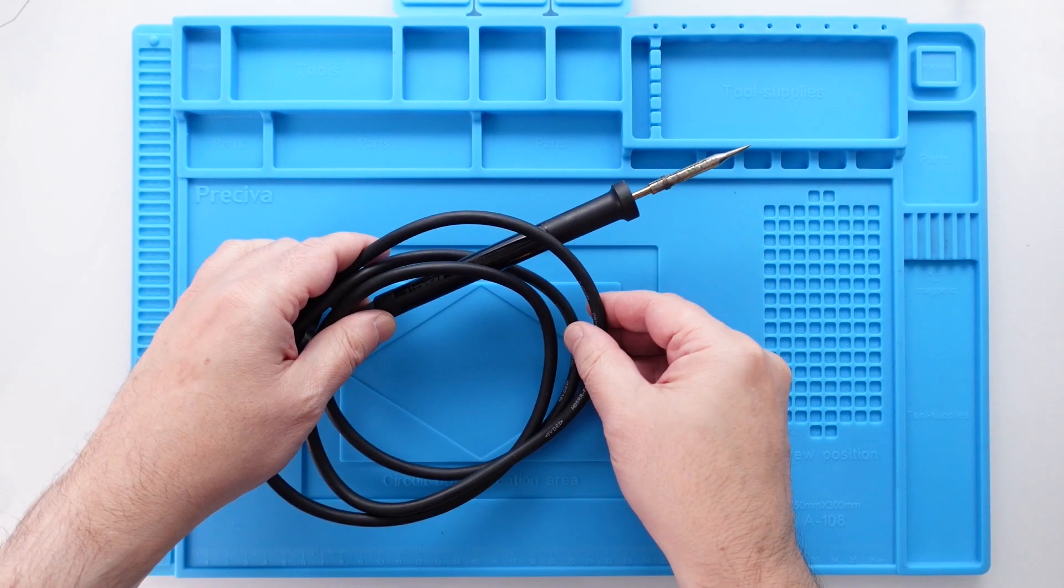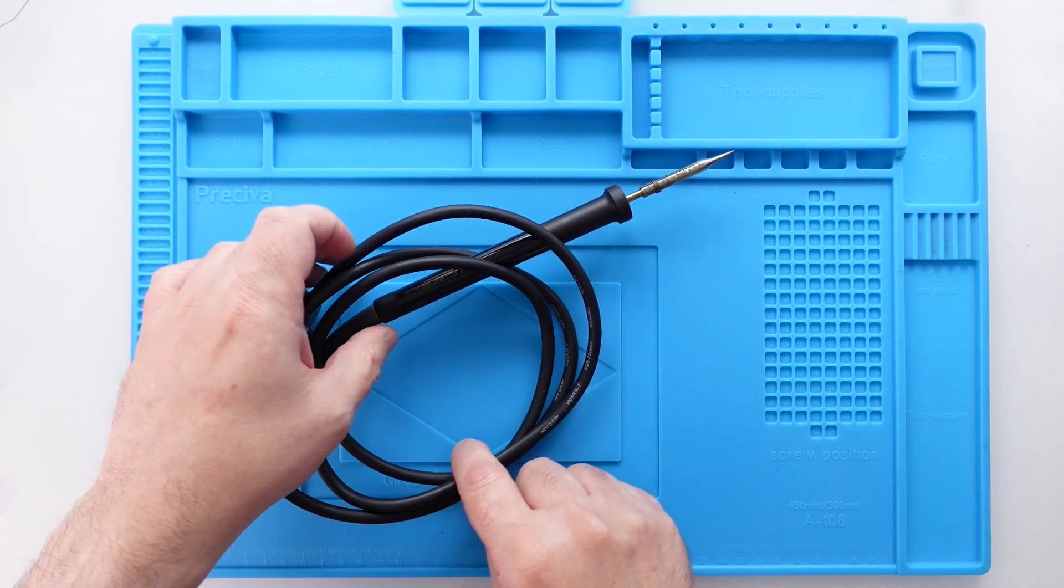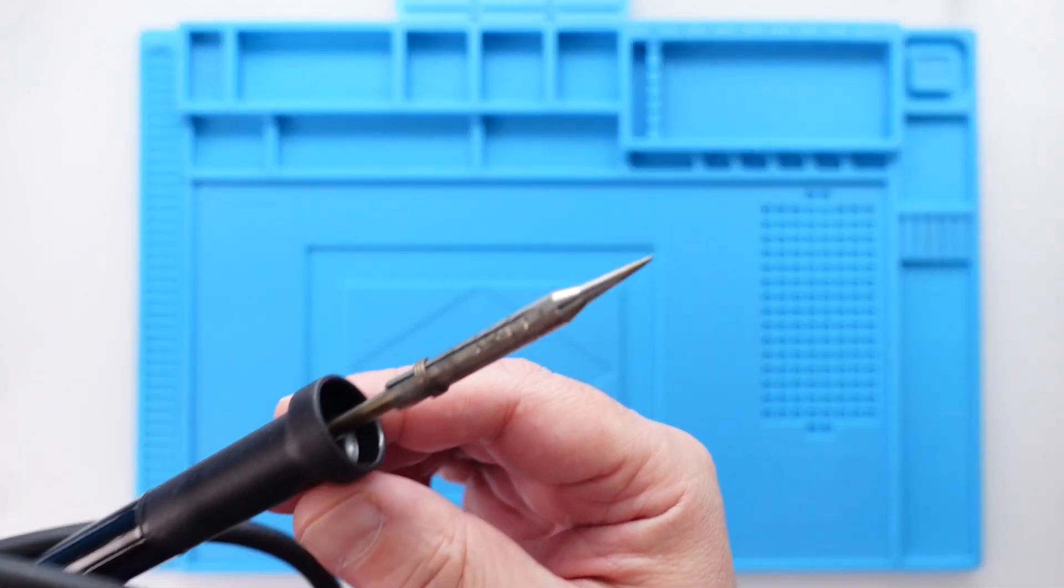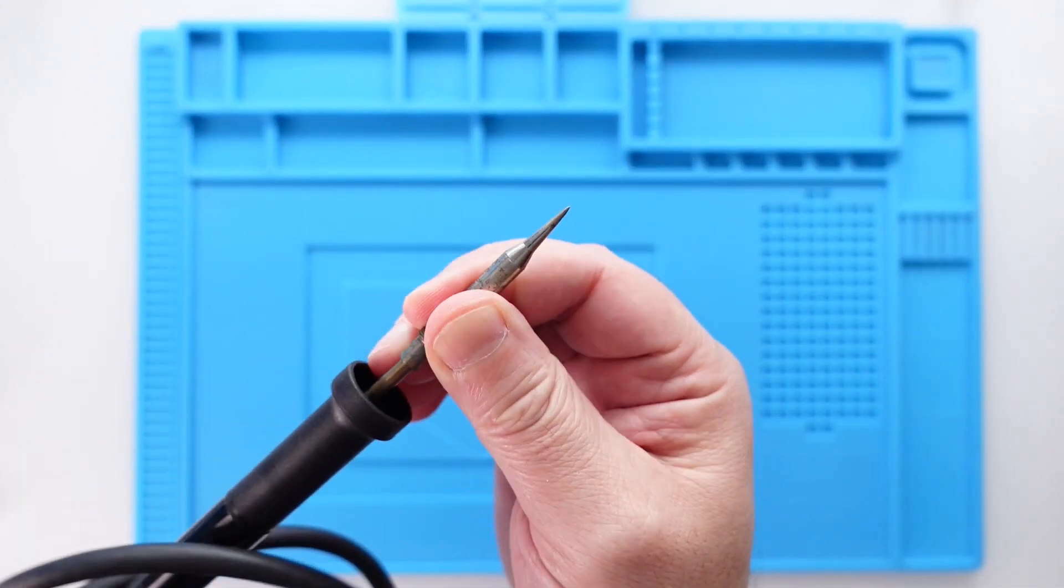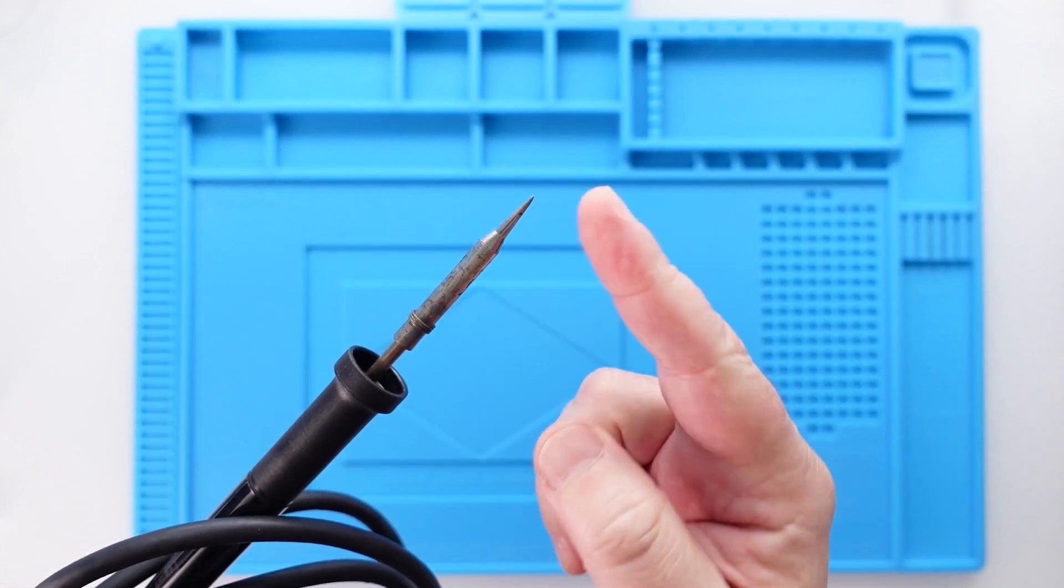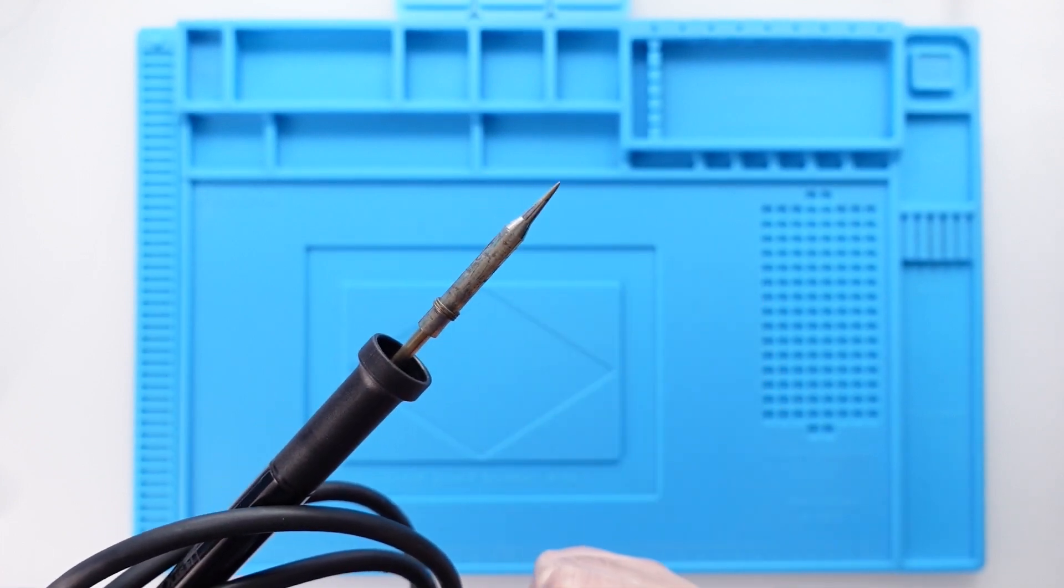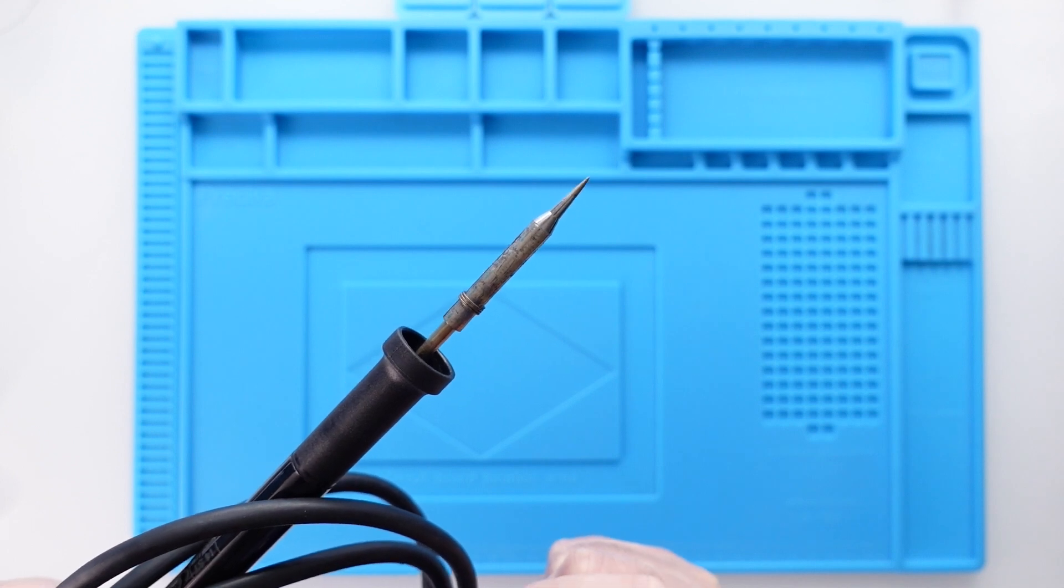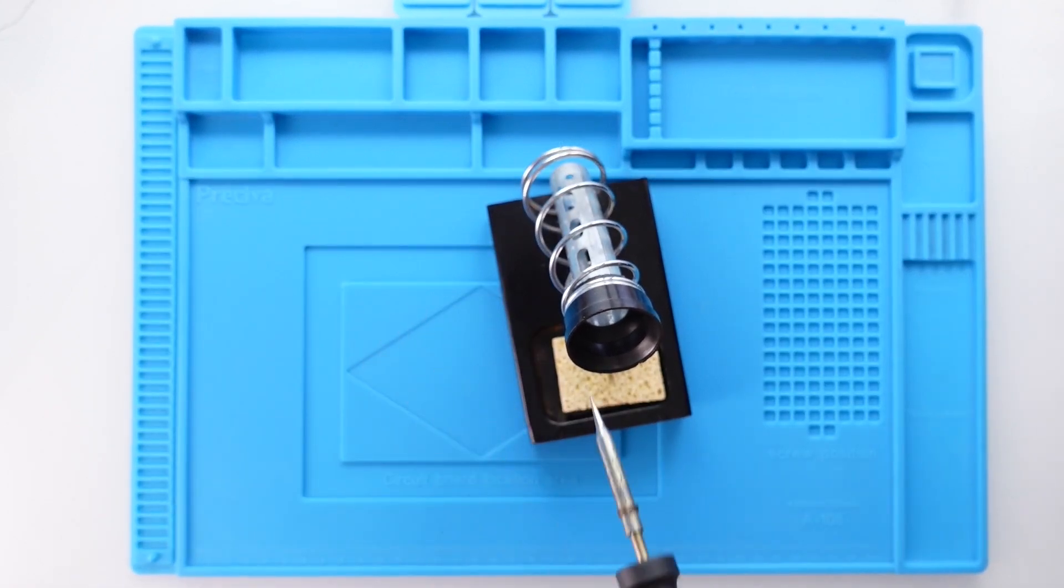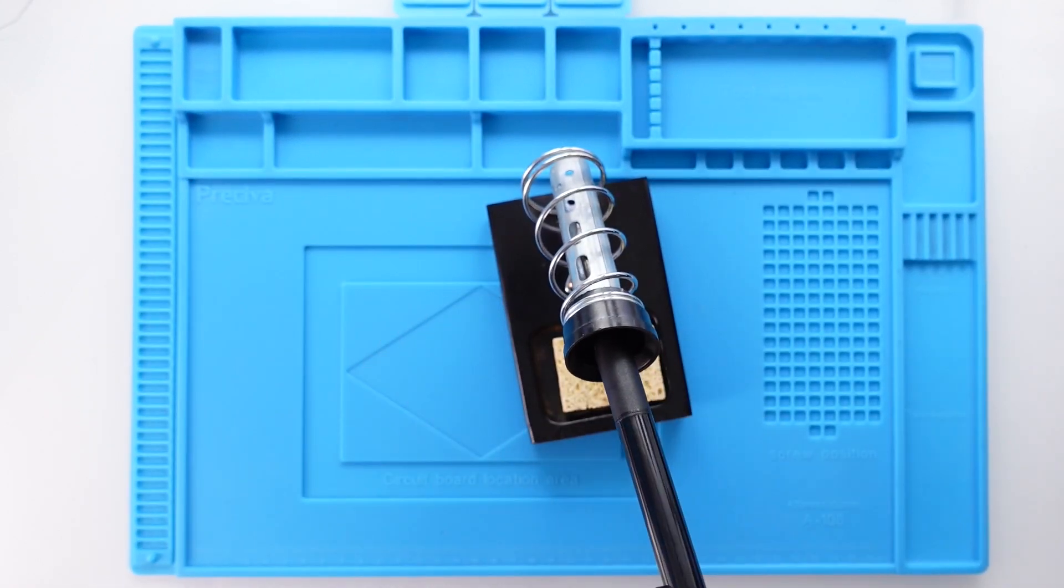What do you need to start soldering? First of all, you need a soldering iron. One like this is cheap and does the job. I started with something like this. At least make sure that you can replace the tip, because it will get old very soon if you use it a lot. Then you need a stand holder, because when you're soldering, after you finish, you need to put your soldering iron somewhere like this.